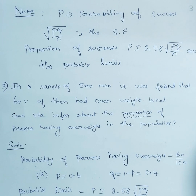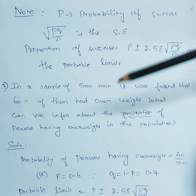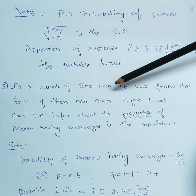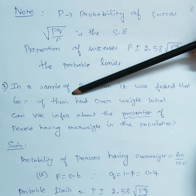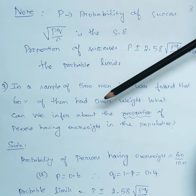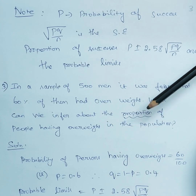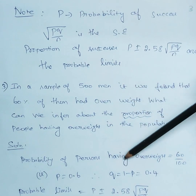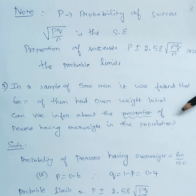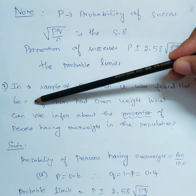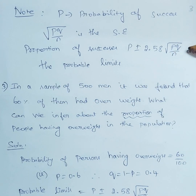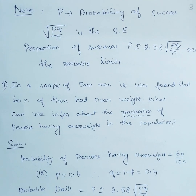Sometimes a question will ask for the probable limits. For example: in a sample of 500 men it was found that 60 percent of them were overweight. What can we infer about the proportion of people having overweight in the population? The probability of a person having overweight is 60/100, so p equals 0.6, and q equals 1 minus p equals 0.4.